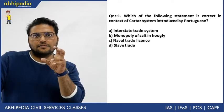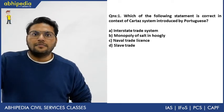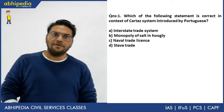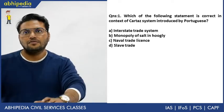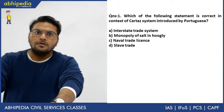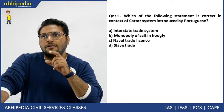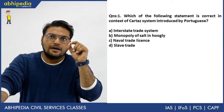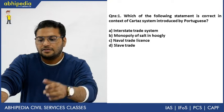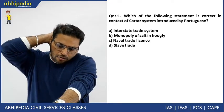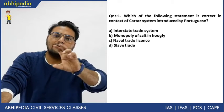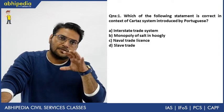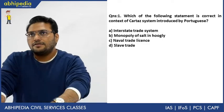The Portuguese introduced a Naval Trade License system (Carta system). Such questions have appeared in UPSC previously. Regarding the British, they started the NAVICERT (N-A-V-I-C-E-R-T) system, which was similar to the Naval Trade License. So the Portuguese had their Carta system and the British had NAVICERT. Answer is C.